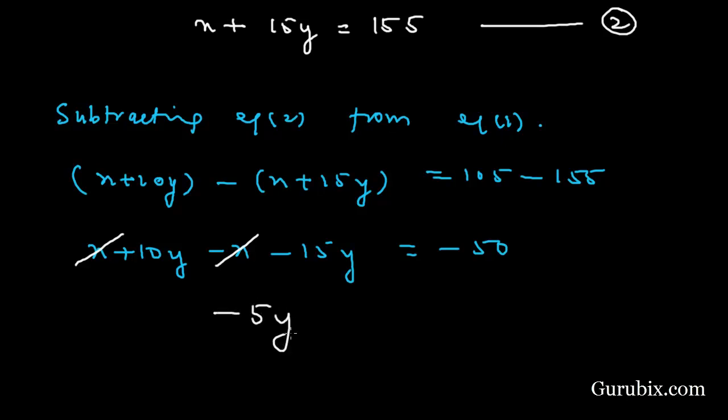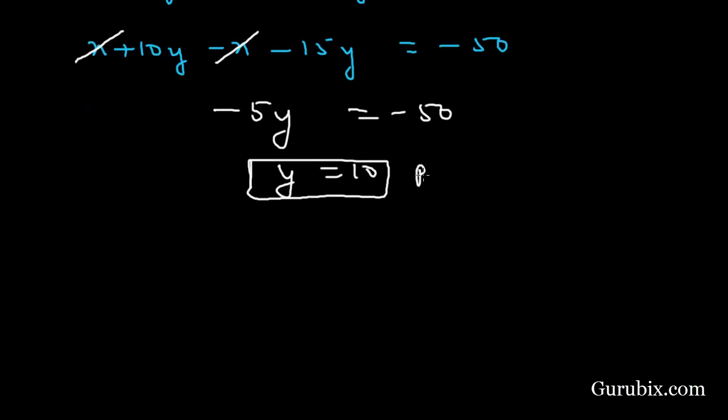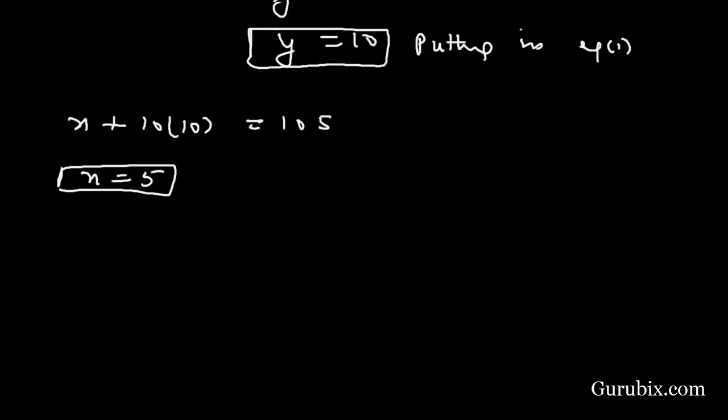Then Y is 10. Now we shall put Y equals 10 in equation number one so that we can find the value of X. Then X plus 10 into 10 equals 105, this means X equals 5.